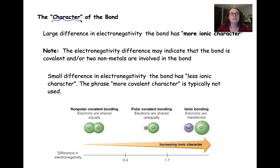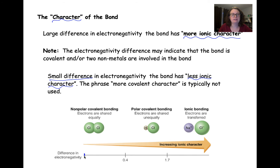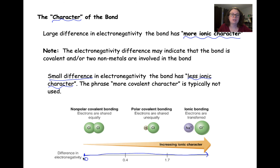We can also determine the character of the bond. If we have a large difference in electronegativity — greater than 1.7 or close to 1.7 — we might say it has more ionic character. A small difference in electronegativity indicates that the bond has less ionic character. This is a real spectrum: if we have a difference of zero we have covalent bonding, and as we move up the scale we get increasing ionic character as our electronegativity difference increases, until we get all the way to a full ionic bond.